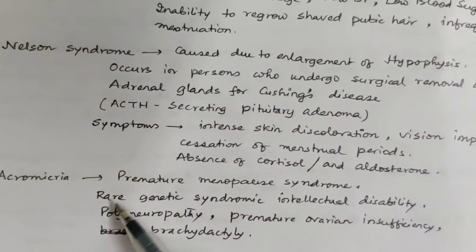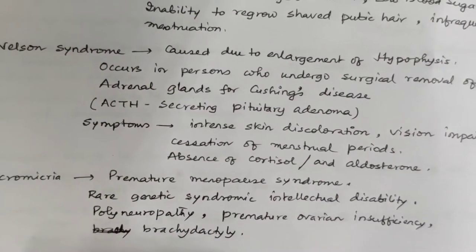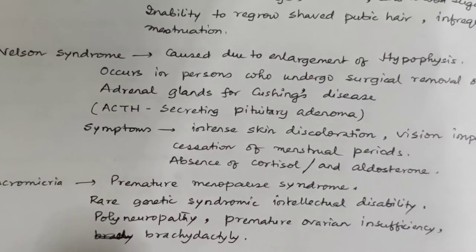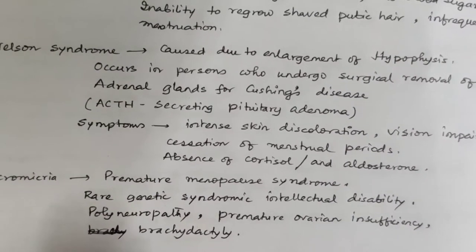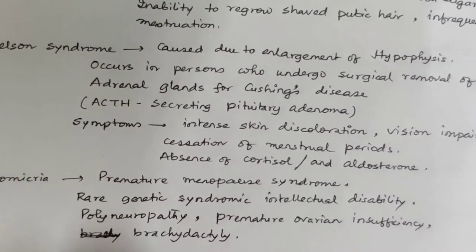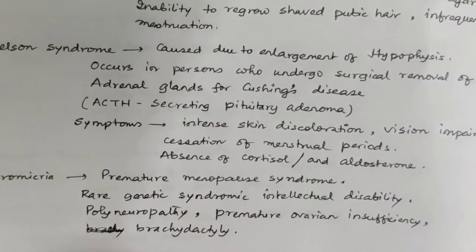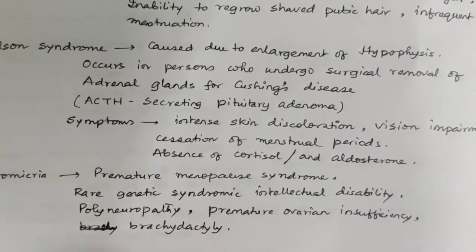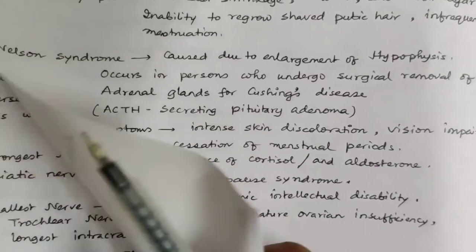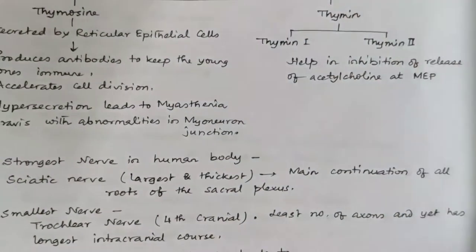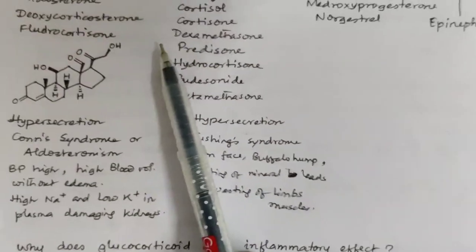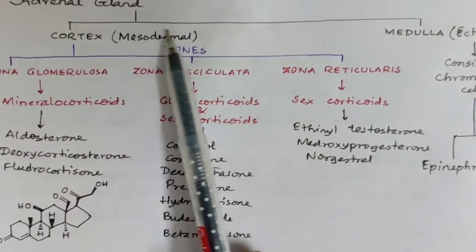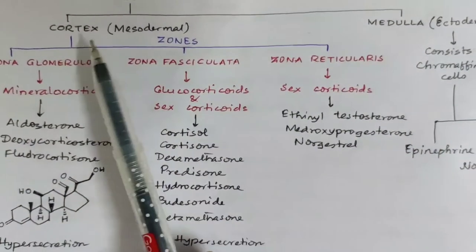Have you heard about acromiria? It is a premature menopause syndrome — a rare genetic syndromic intellectual disability having polyneuropathy, premature ovarian insufficiency, and brachydactyly. Next we come to the adrenal gland, or suprarenal gland. It has two parts: the cortex, which is mesodermal in origin, and the medulla, which is ectodermal in origin.